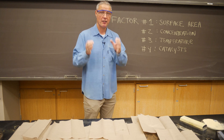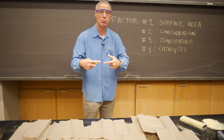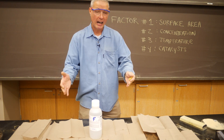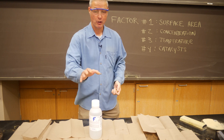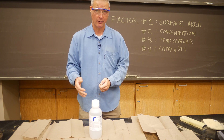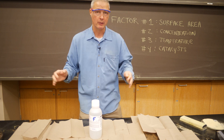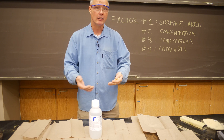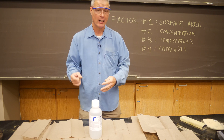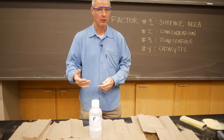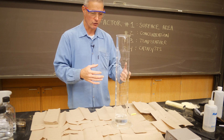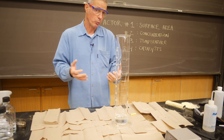Number four is the presence of a catalyst — think of it as a helper or a matchmaker for the collisions. Right here we've got hydrogen peroxide, but it's 10 times stronger than the kind you get in a drugstore — this is 30% hydrogen peroxide. We keep it in a dark closet because light will actually help it decompose into water and oxygen. We're going to speed that up a bunch with the catalyst.